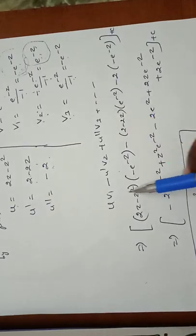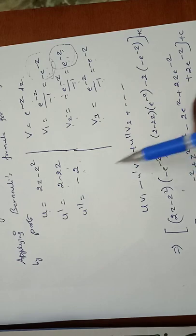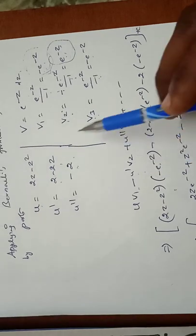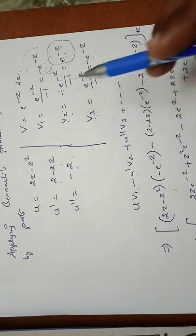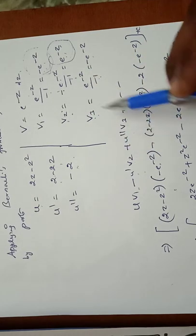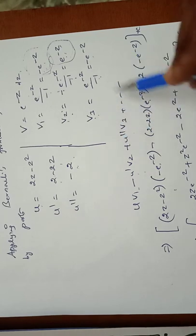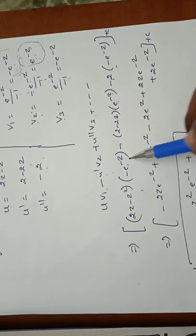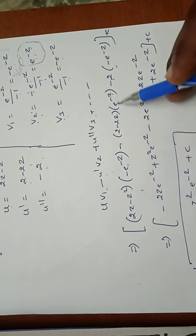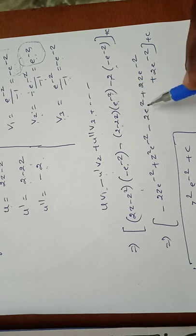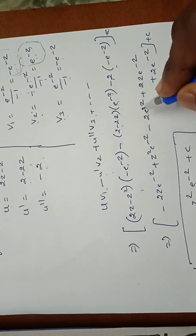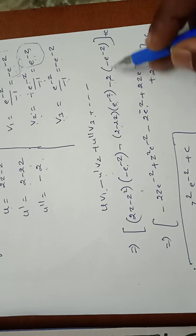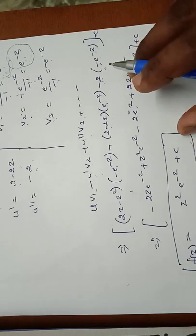Applying the Bernoulli formula: (2z - z²)·(-e^(-z)) minus (2 - 2z)·(e^(-z)) plus (-2)·(-e^(-z)) + C. Expanding: -2z·e^(-z) + z²·e^(-z) - 2·e^(-z) + 2z·e^(-z) + 2·e^(-z) + C. Simplifying, several terms cancel, giving f(z) = z²·e^(-z) + C.